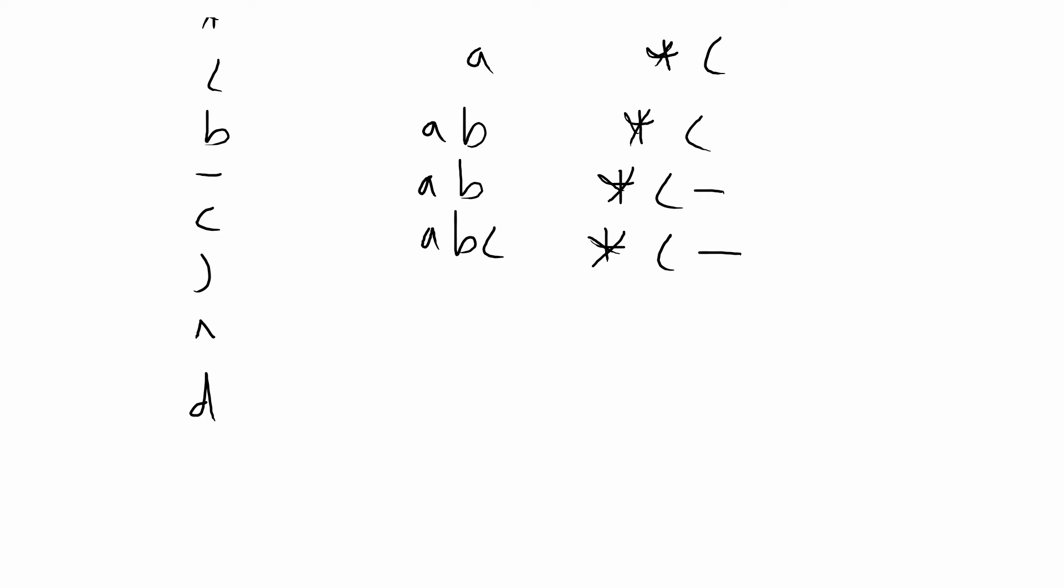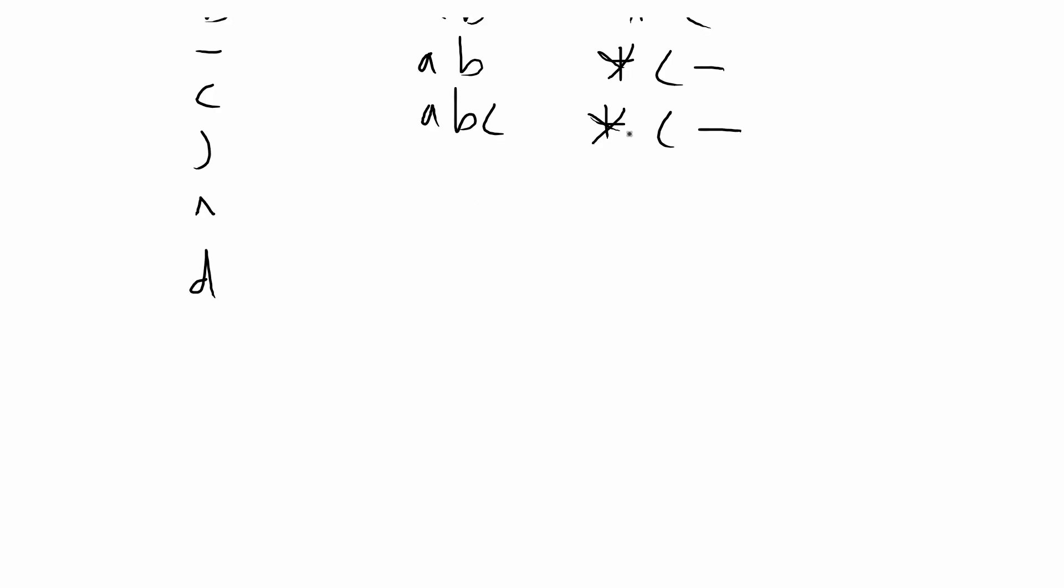Here we have the close parentheses. With the close parentheses, we're going to pop the stack until we get to the open parentheses. Now we have a, b, c, and we pop the minus symbol. We get rid of the close parentheses and the open parentheses, so we don't print that to the screen. Now our stack just has the star again.